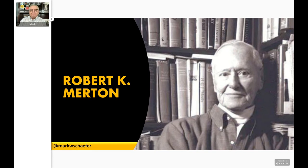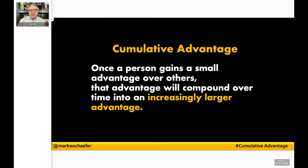When he was a university professor, his students were complaining that they were doing all the work and the famous professors were taking credit, writing papers that made them more successful and famous — bigger offices, bigger resources — while the students just kept getting poor. He did this famous research and came up with the idea called the Matthew Effect, which later became called Cumulative Advantage. It goes something like this: once a person gains a small advantage over others, that advantage will compound over time into an increasingly larger advantage.